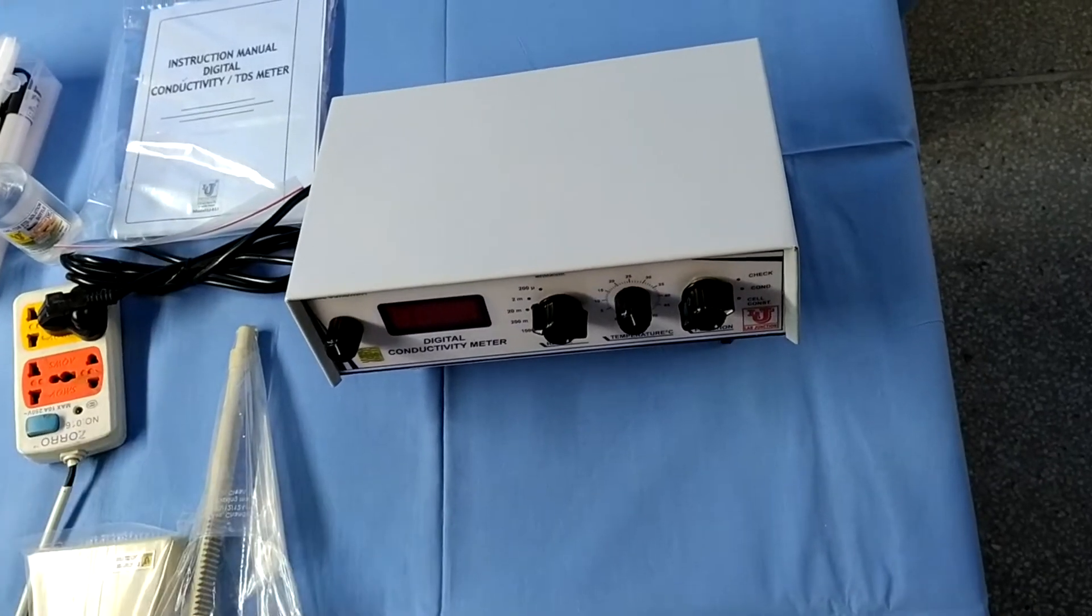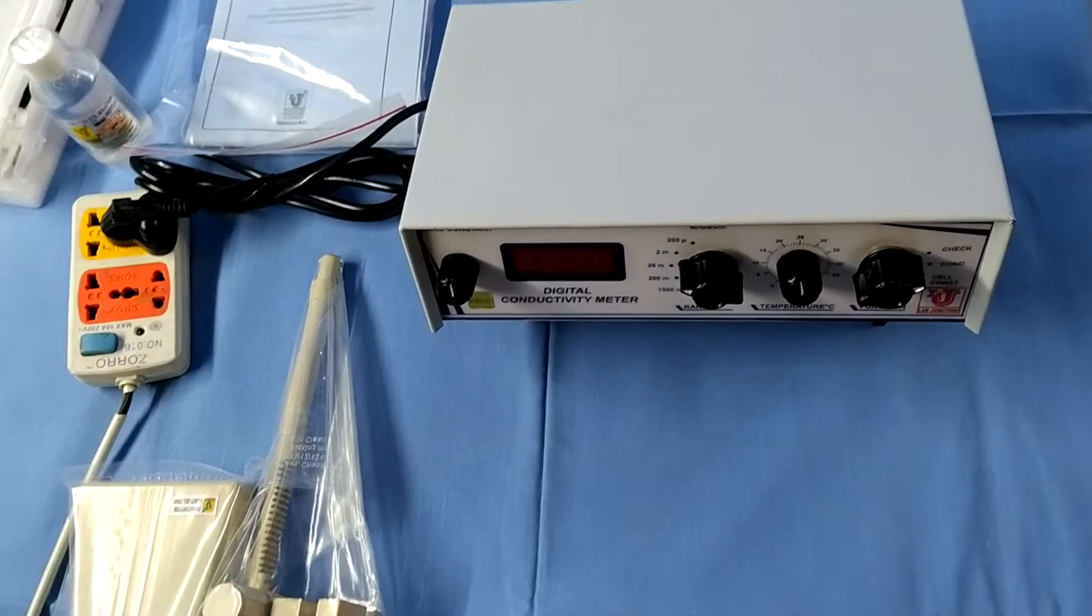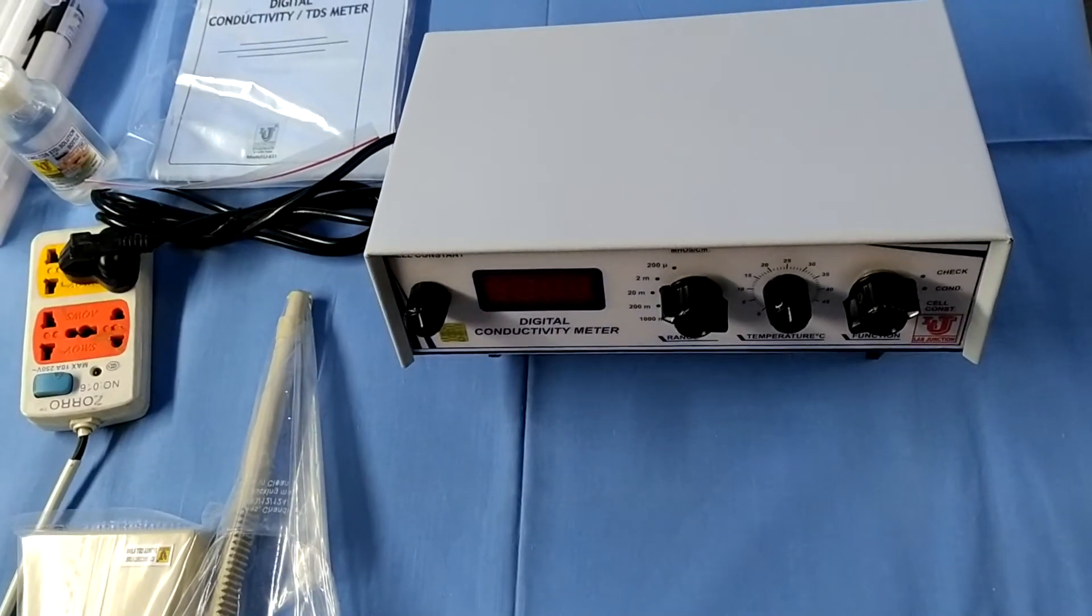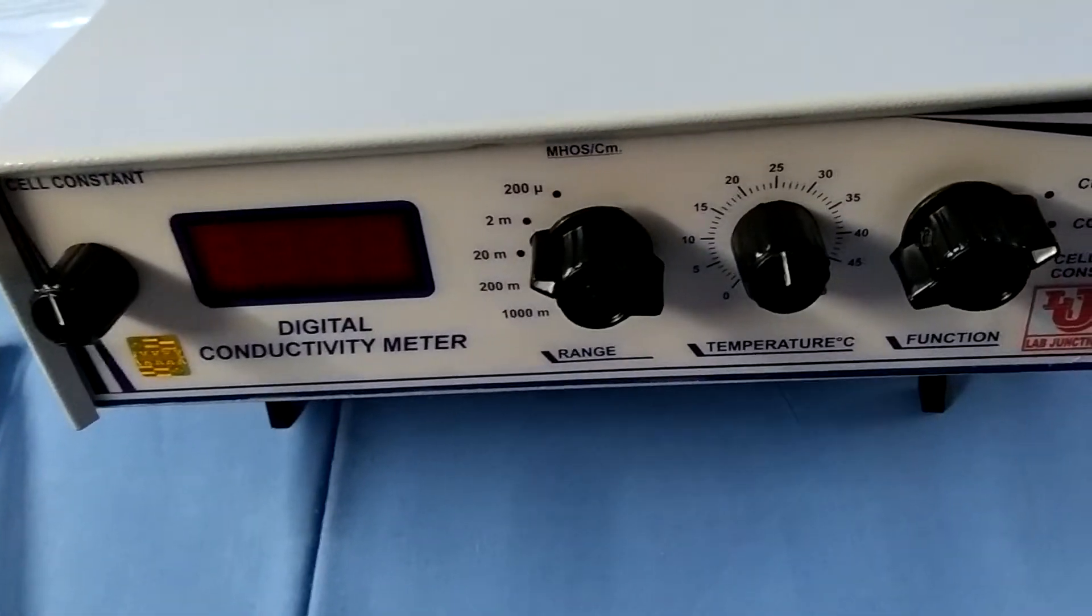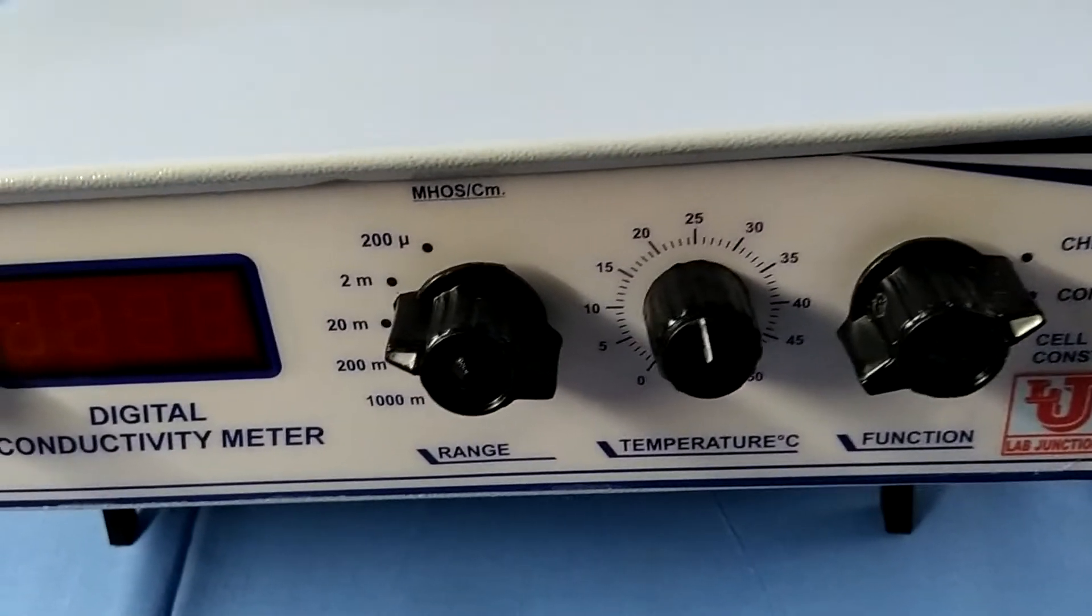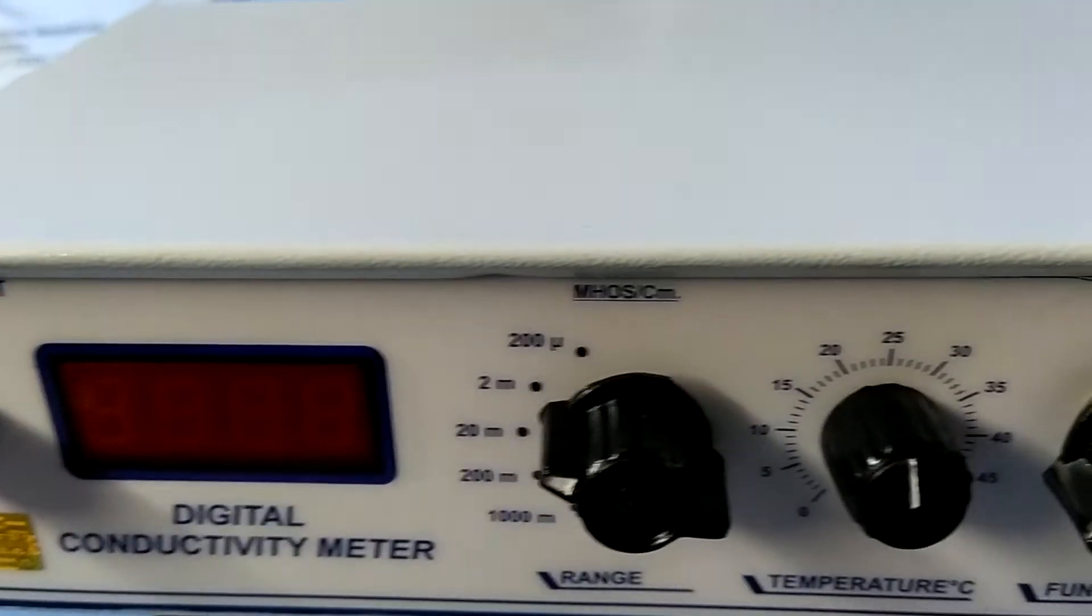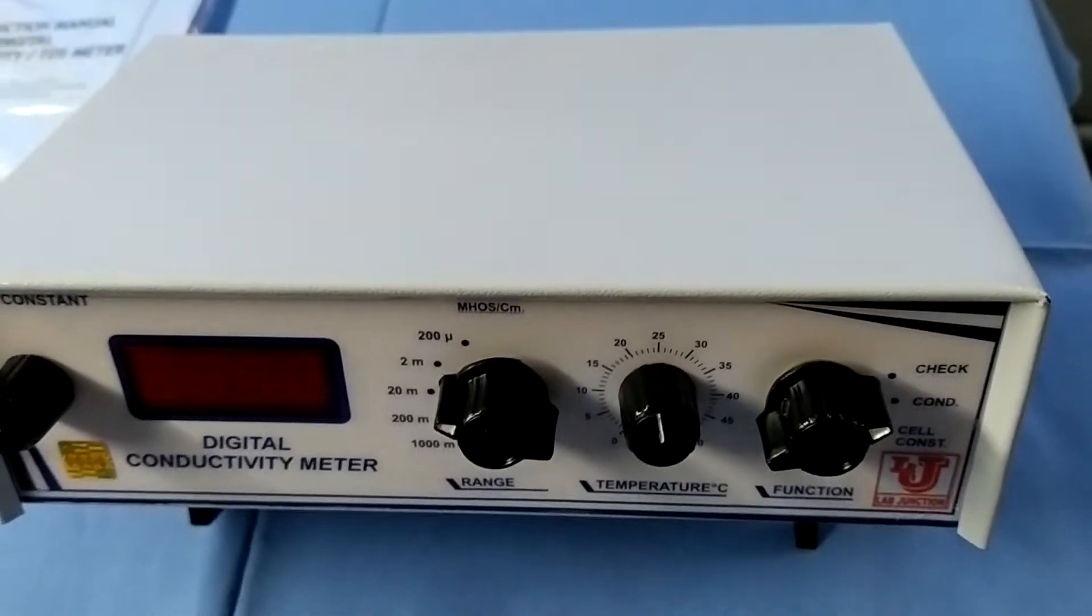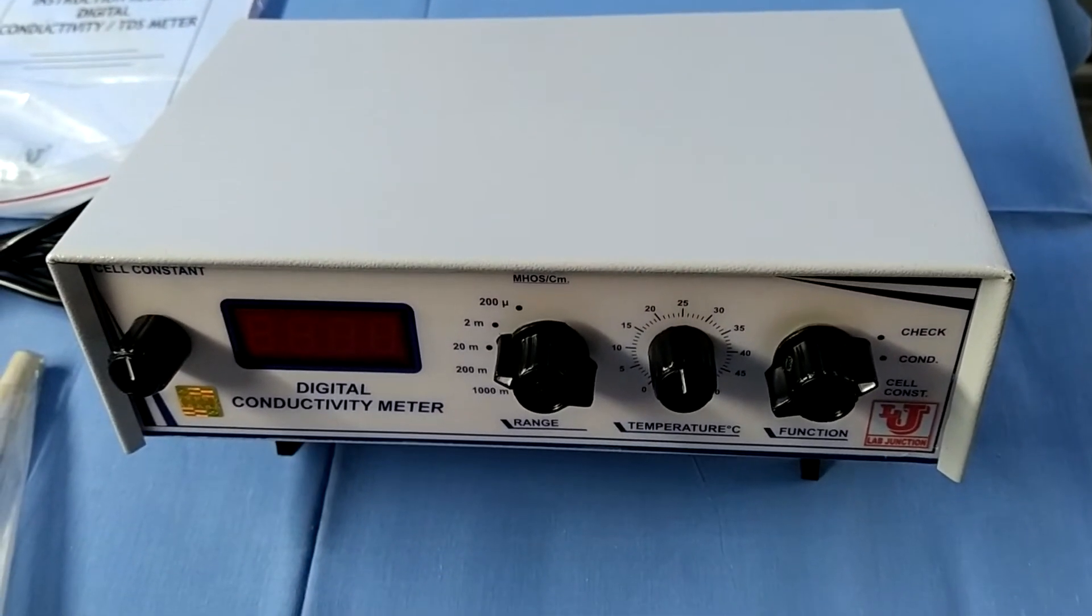Lab Junctions Digital Conductivity Meter. We have two models of Digital Conductivity Meter. One model is LJ611. Second model is LJ606.